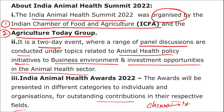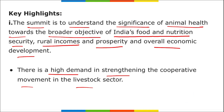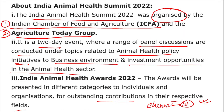The Animal Health Summit was a two-day event with panel discussions on animal health policy, business environment, and investment opportunities. Awards were also presented in different categories for outstanding contributions. Additionally, the first ambulance for street animals was launched in Chennai, Tamil Nadu.